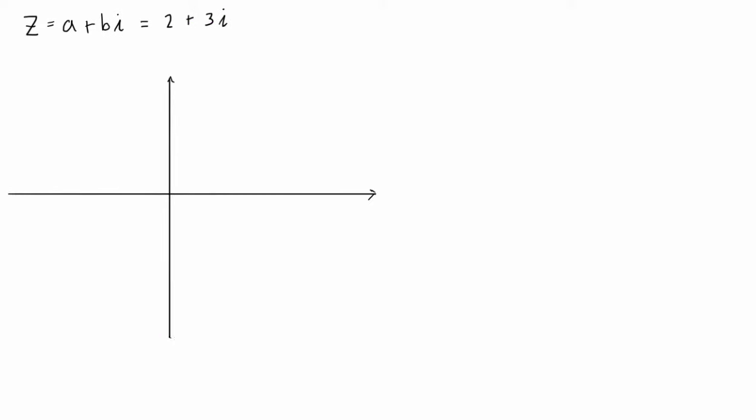So if we go ahead with our standard geometric interpretation of this, we can plot this complex number on the complex plane where a is 2 and b is 3. So we can think of the complex number z as a point in this Cartesian space just with the coordinates a, b.